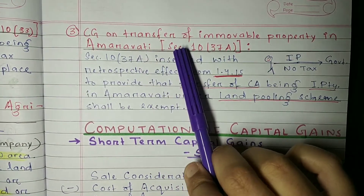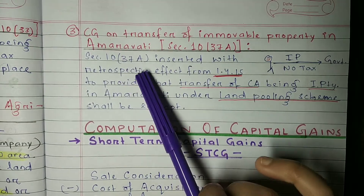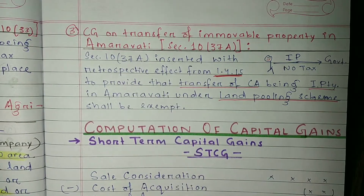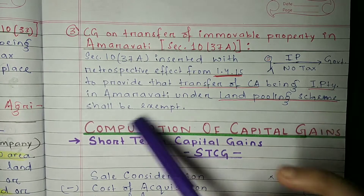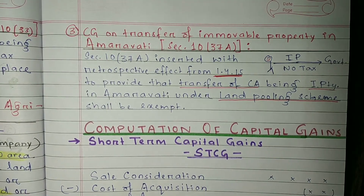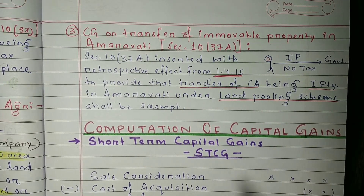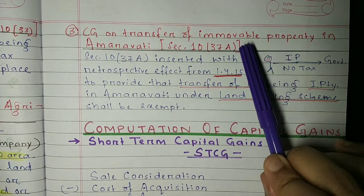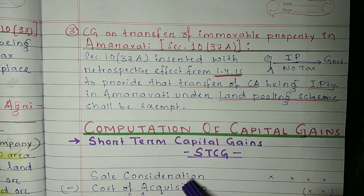Now comes the third point: capital gain on transfer of immovable property in Amravati under Section 10 clause 37A. This section was inserted with retrospective effect from 1st April 2015 to provide that transfer of a capital asset being immovable property in Amravati under the land pooling scheme shall be exempted. Amravati is a city where the government is doing a lot of development. The government needs land and buildings — mostly immovable properties — and if you have any immovable property in Amravati and give it to the government, then on that transaction you do not need to pay any tax.